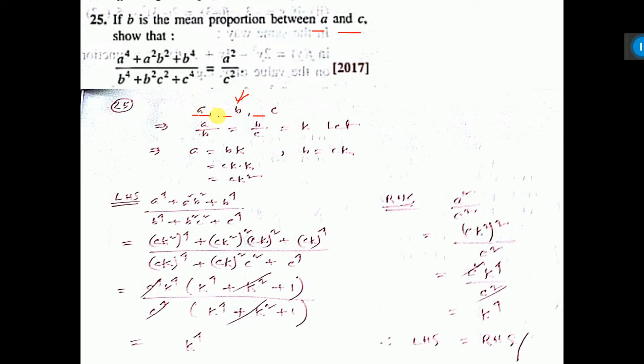So, if three terms are there, you can write first by second equal to second by third equal to K, I consider. Then A is equal to B into K, B is equal to C into K.